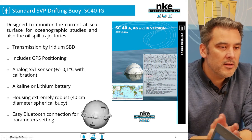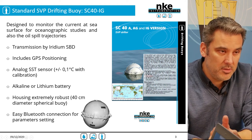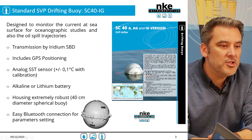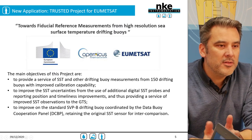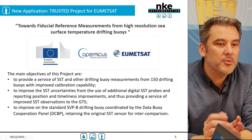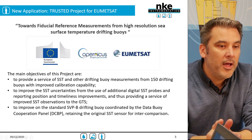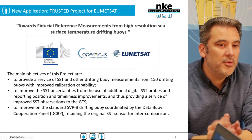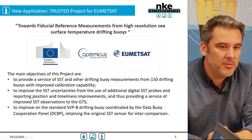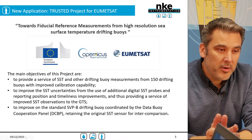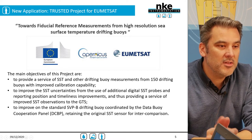To complete this basic version, we have recently introduced modifications to the initial design. Now, talking about a new application, let's discuss the TRUSTED project. The Copernicus-funded TRUSTED project aims to provide a fiducial reference measurement for the calibration of the temperature radiometer of the Sentinel-3 satellite constellation. Within the framework of the project, a new type of surface drifter, the SVP-BRST, was developed.